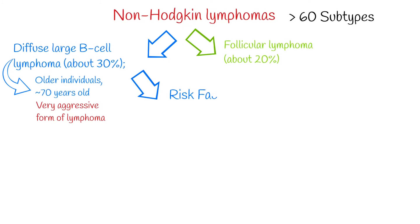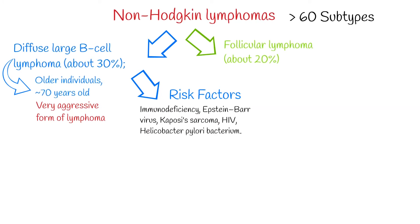Important risk factors for diffuse large B-cell lymphoma are immunodeficiency, infections with the Epstein-Barr virus, Kaposi's sarcoma-associated herpesvirus, human immunodeficiency virus, and the Helicobacter pylori bacterium.